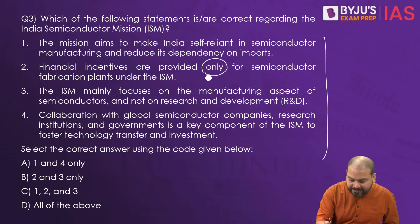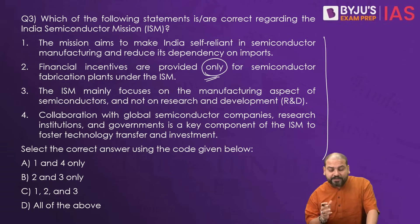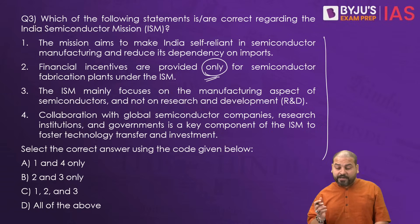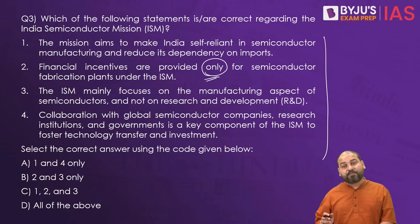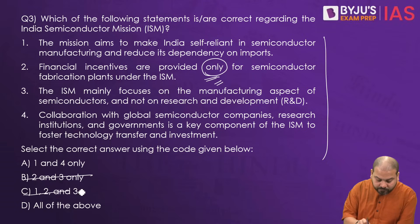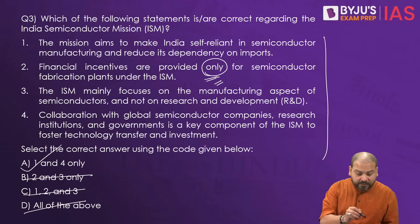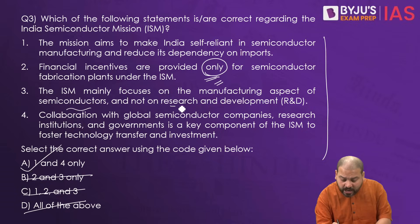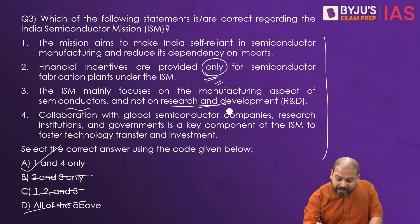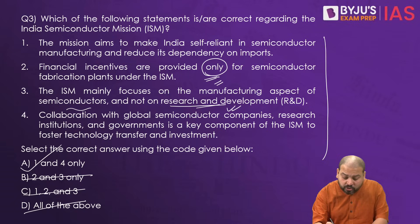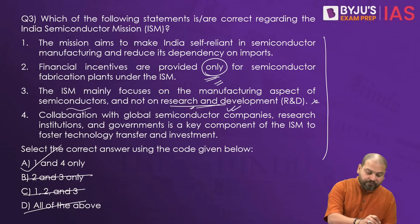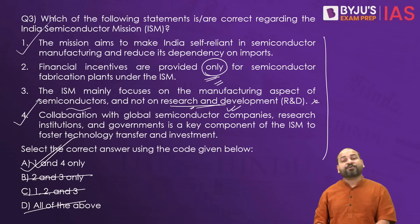I get one clue with the word 'only' — do you think financial incentives would be provided only for semiconductor fabrication plants? No, it is provided for other purposes also. So point number two is wrong. That means point three is also wrong — if you see, the ISM mainly focuses on manufacturing but not on R&D. Do you think such a big mission would not focus on R&D? That's never going to happen. So that statement was also wrong. Of course, one and four are correct — that's why the option is A.